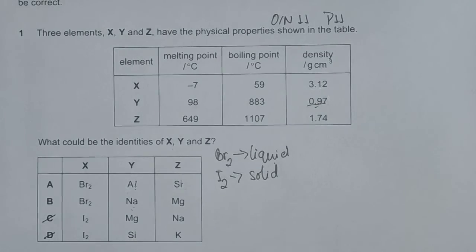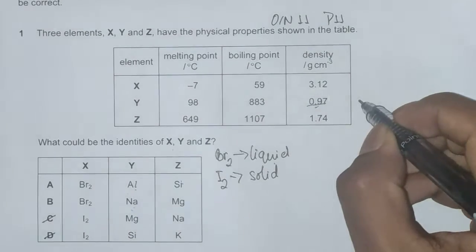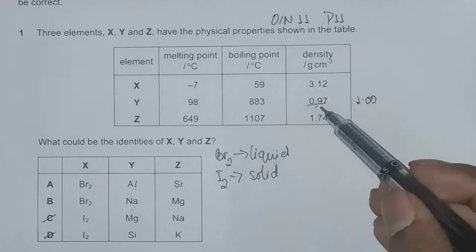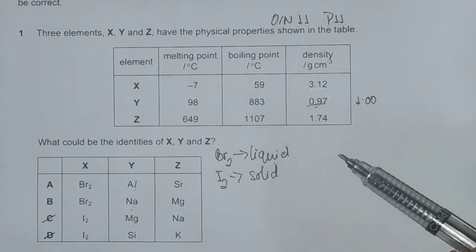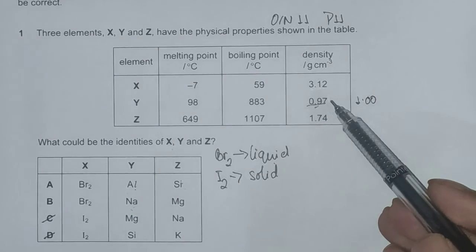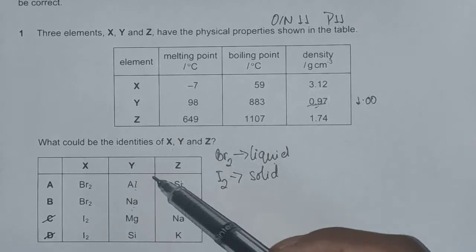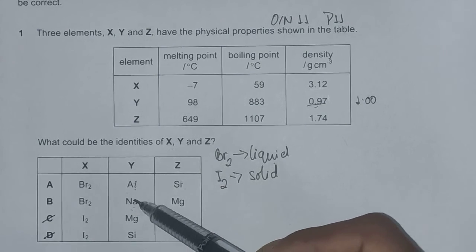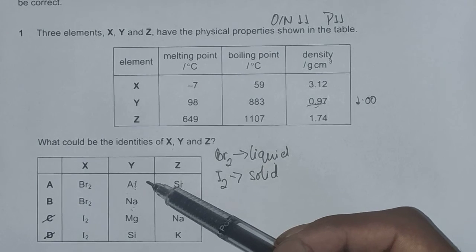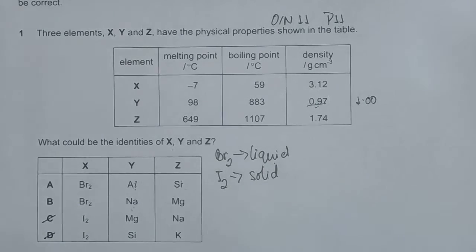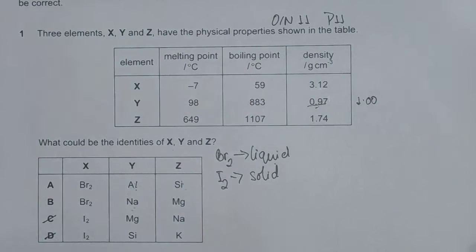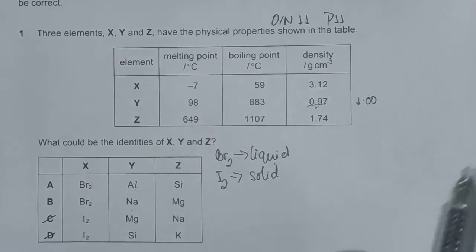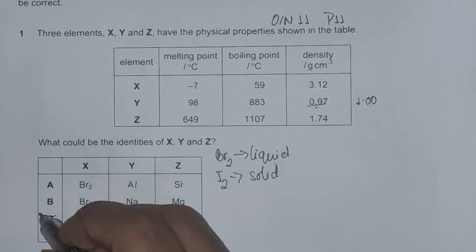The density of water is 1.00, which would mean Y floats in water rather than sinks. Y is lighter than water. From our options, aluminum and sodium, aluminum is heavier than water and sinks, but sodium is lighter than water and it explodes when it's on the surface of water. So our correct answer should be B.